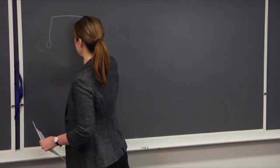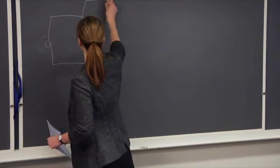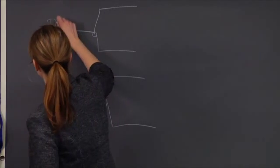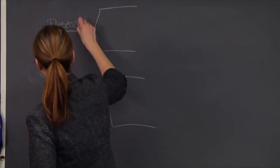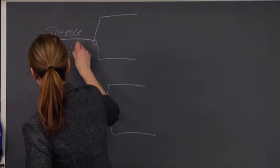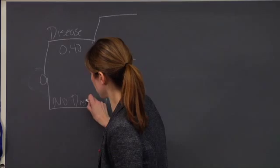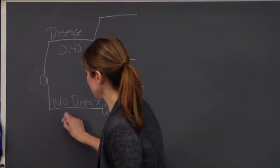I can again draw the probability tree where the probability of the disease is now 40%, and probability of no disease or no HIV is 60%.